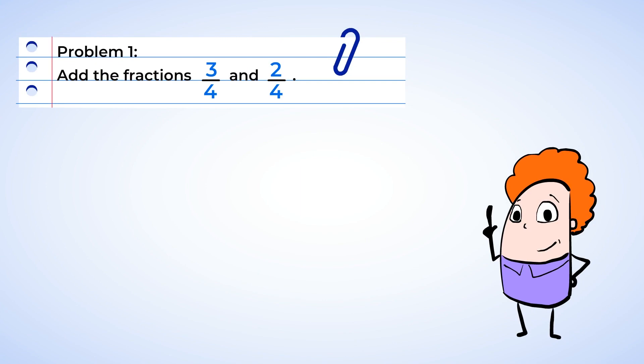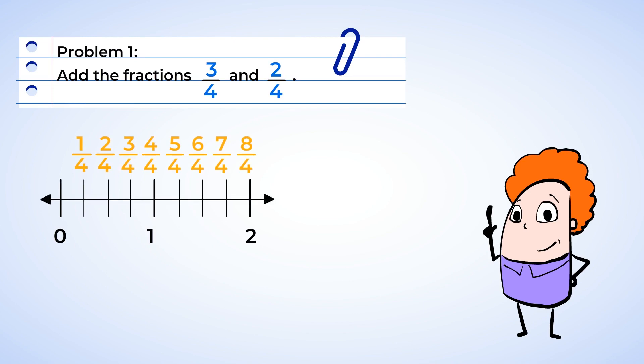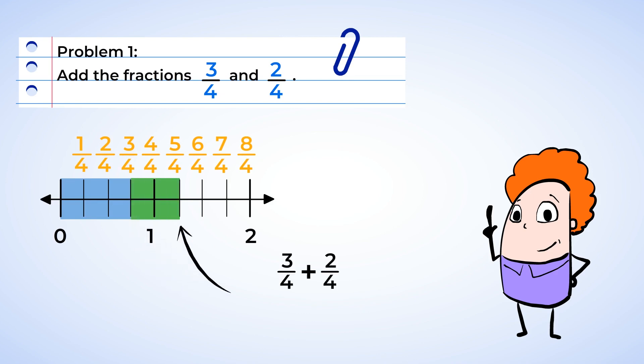Add the fractions three-fourths and two-fourths. Having a visual can really help, so we can use a number line for this problem. Here is the number line, and it's divided into four parts since we're working with fourths. We're going to start at three-fourths, and we're adding two-fourths, so we can just move two sections over. We are now at one and one-fourth. We added three-fourths and two-fourths and got a sum of one and one-fourth.